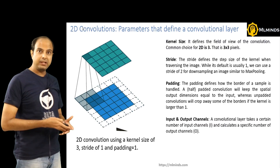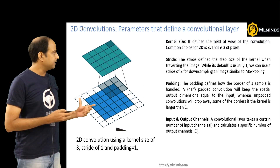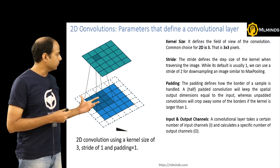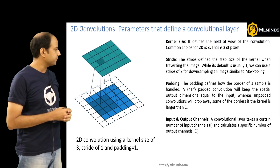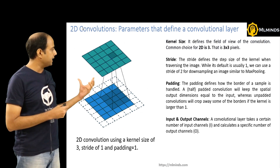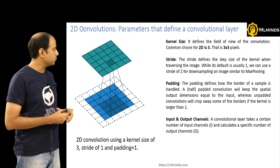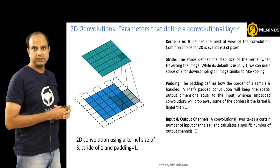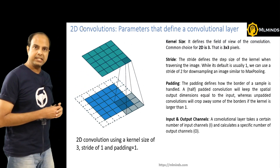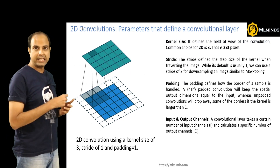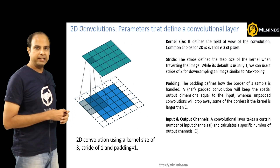A typical 2D convolution looks as follows — this animation depicts it. The original image is a 5×5 image and we are applying a 3×3 filter on it to obtain a 5×5 output at the top. Notice that the 5×5 original image is padded with a border of size one. So a typical 2D convolution includes this thing called padding.